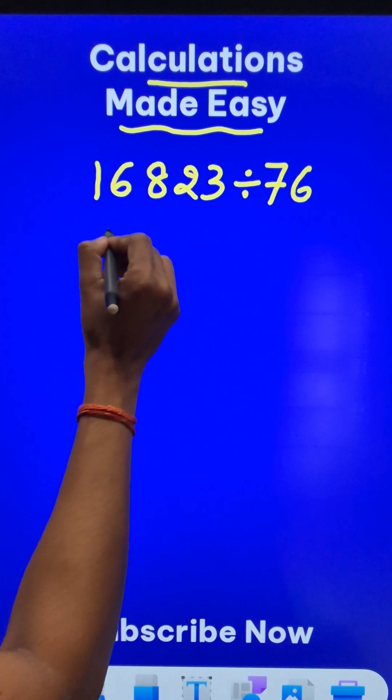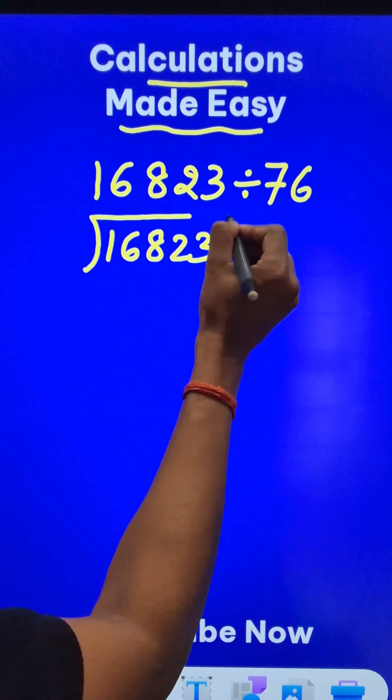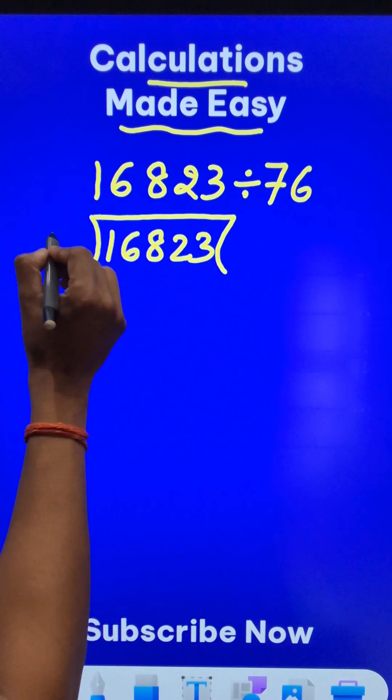Let's do the smart way. Here we have 16823 which is the dividend and we need to divide it by the divisor which is 76.